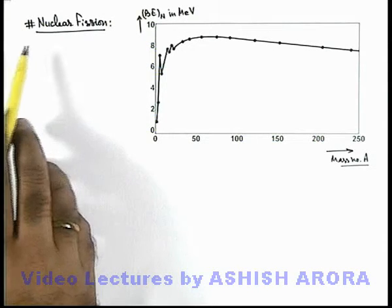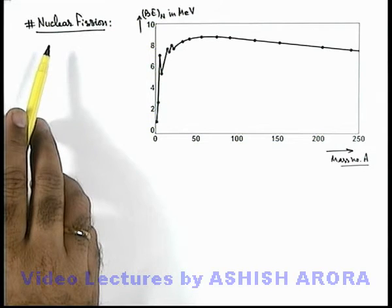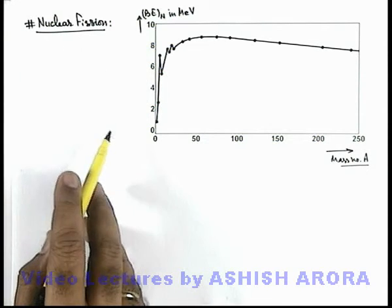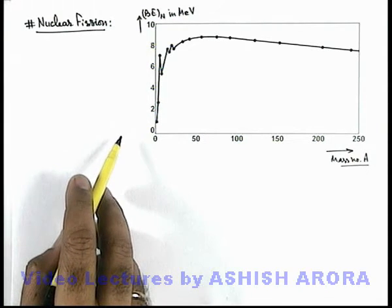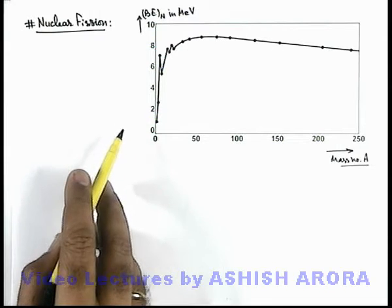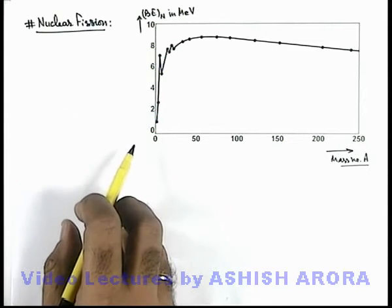Let us now study nuclear fusion in more detail. Let's have a look at the picture which we've already seen in the previous section, which gives us the idea about the variation of binding energy with mass number.